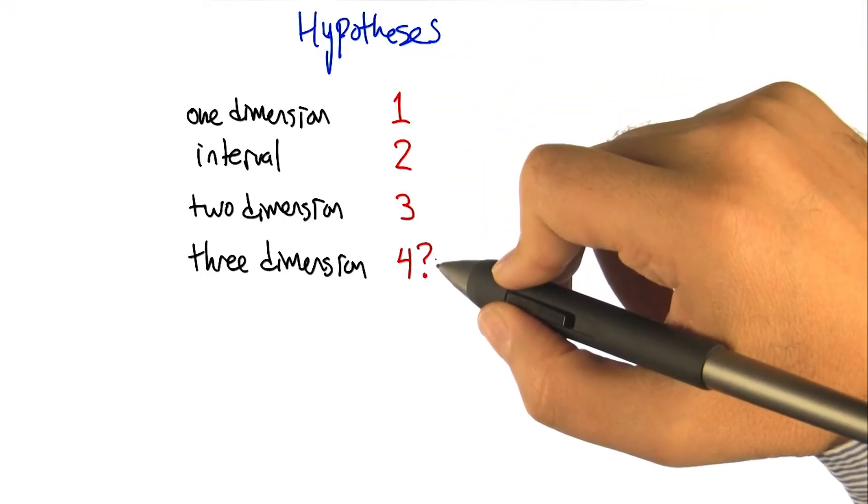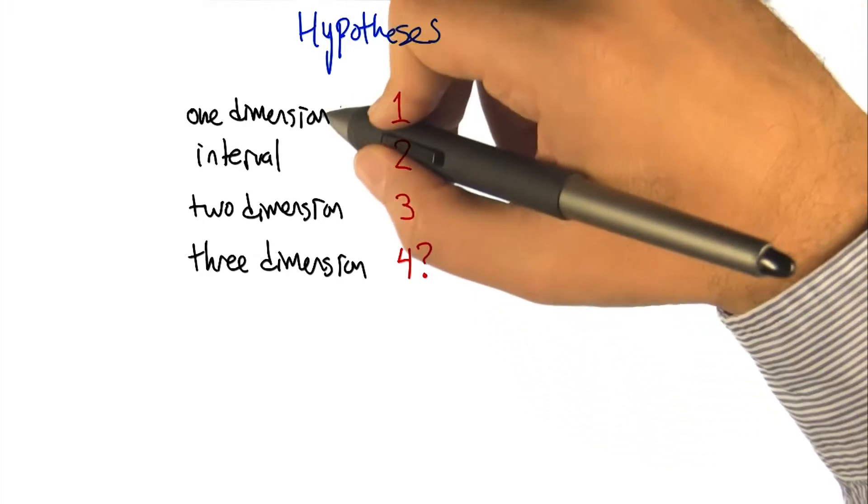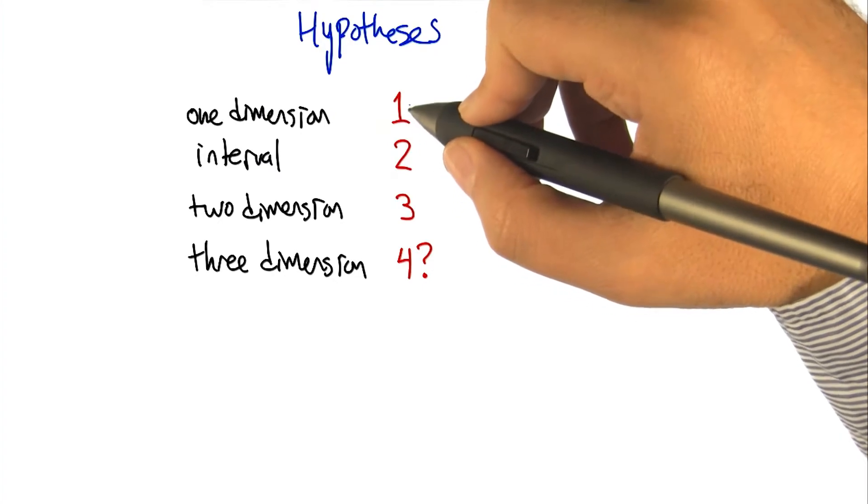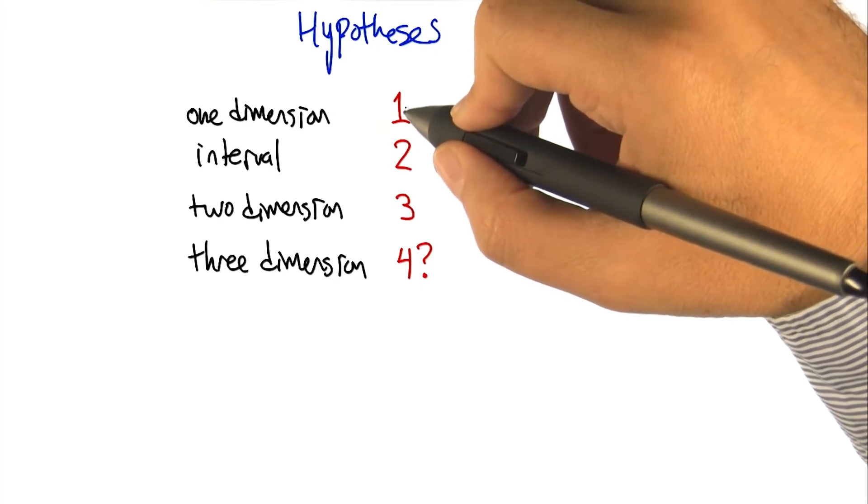All right, so let me try to write that down in a way that lets us summarize it. So I think what you're saying is when we did that one dimensional case, it had,